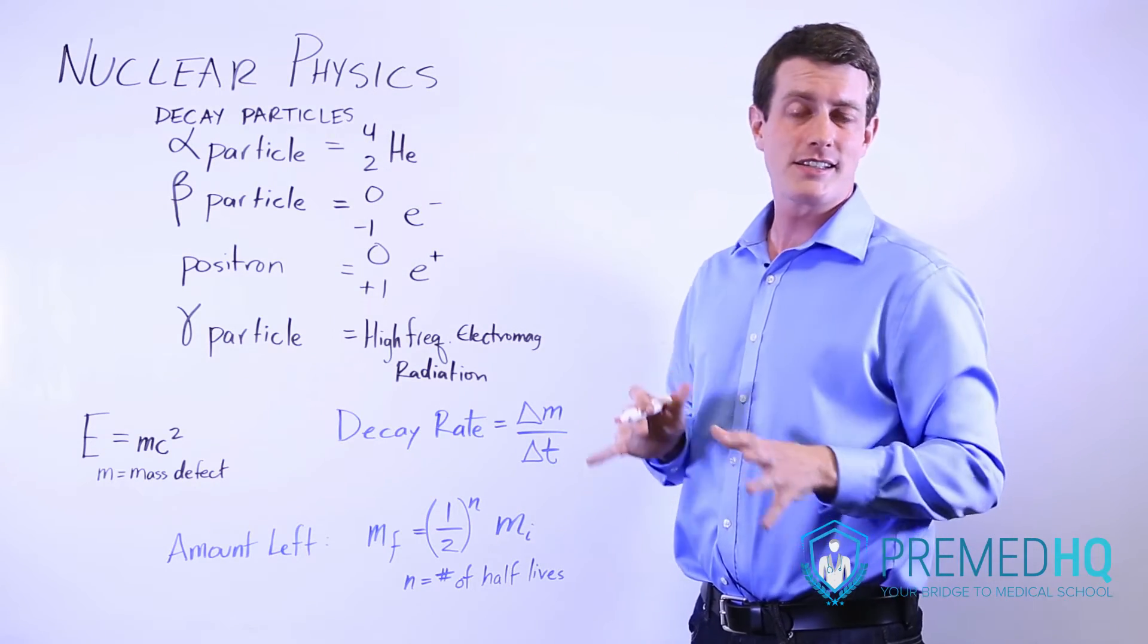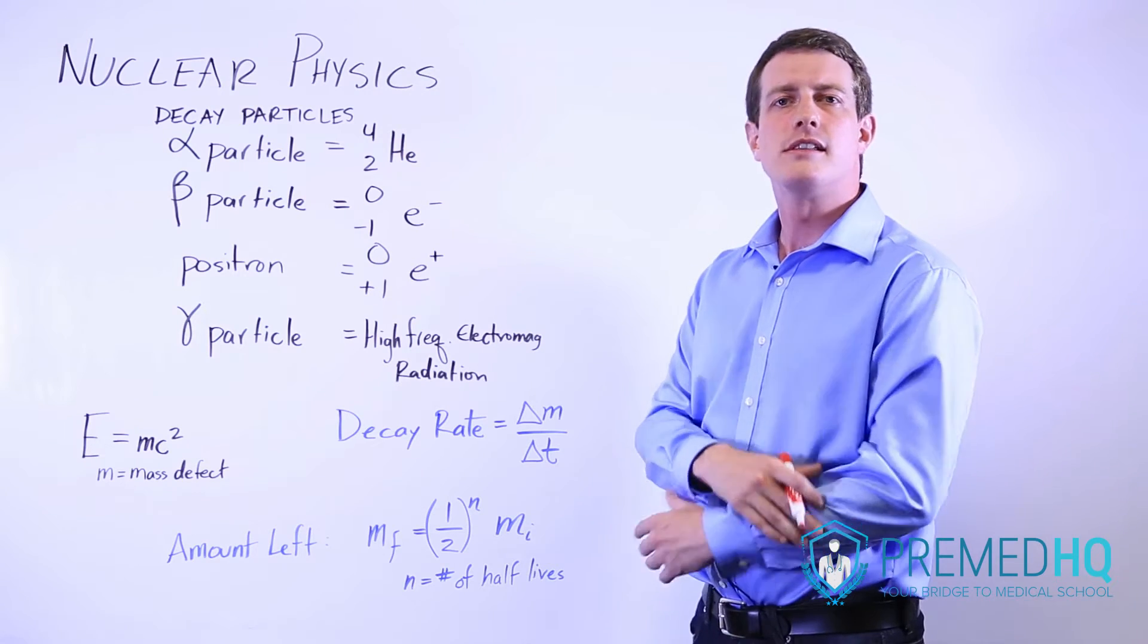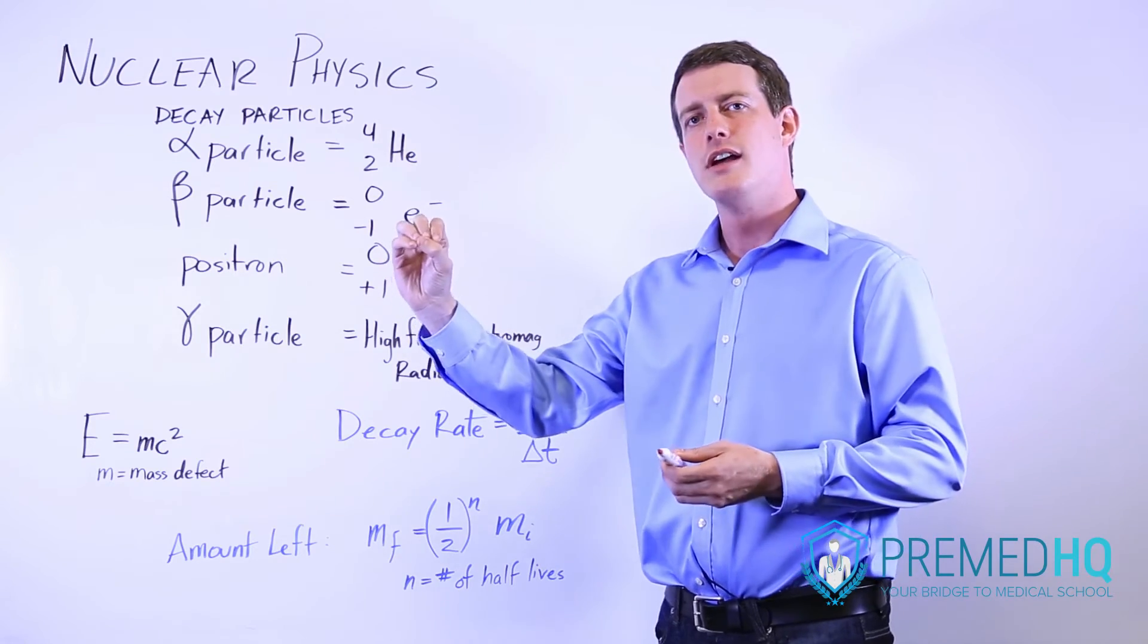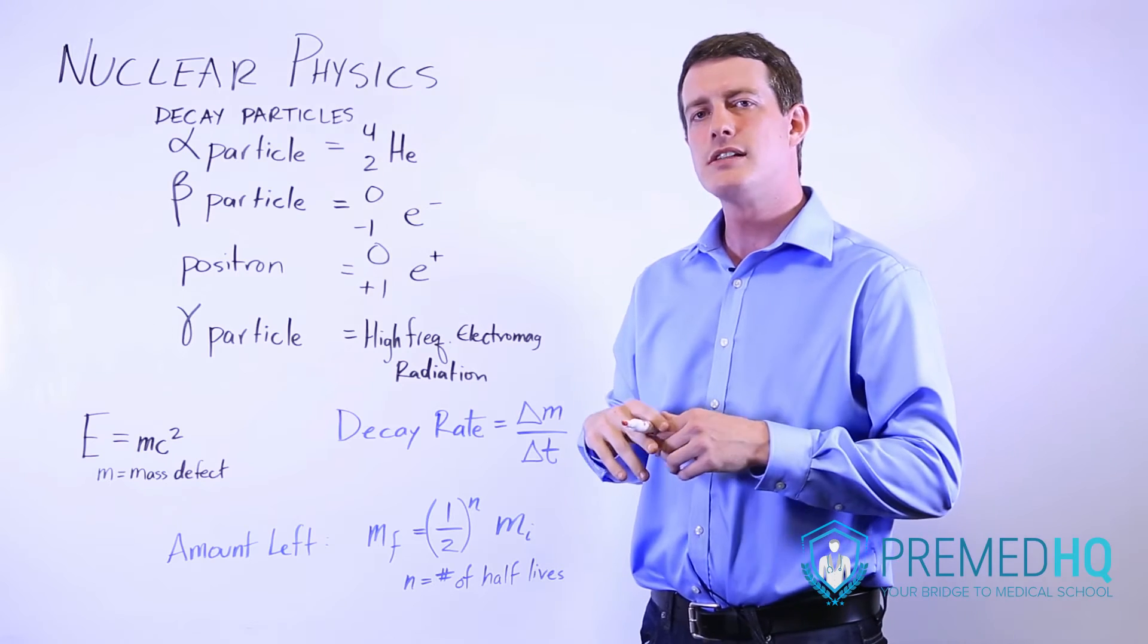Another area that you can see nuclear physics show up on a lot of exams is that it can be treated as a collision. You can have a stationary nucleus that releases an alpha particle that travels very, very quickly.